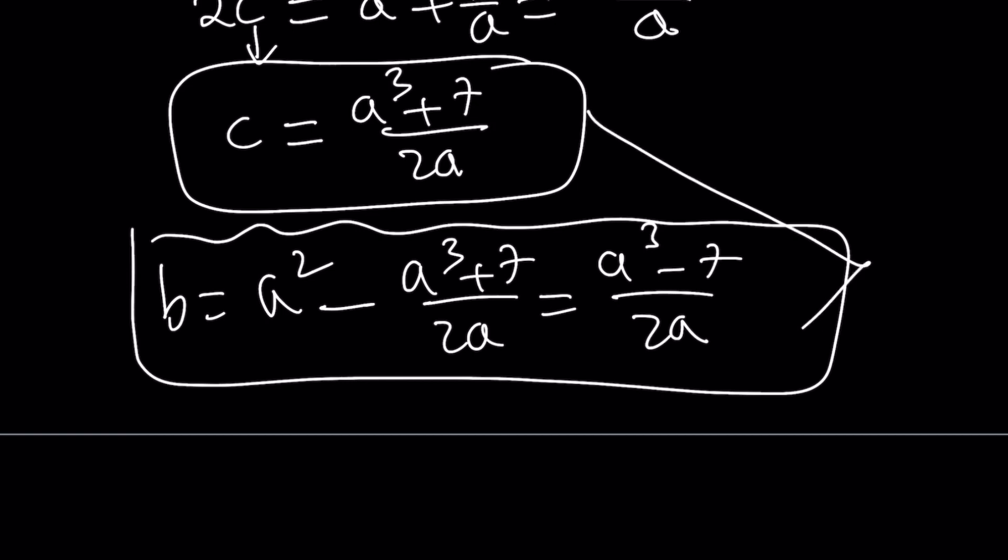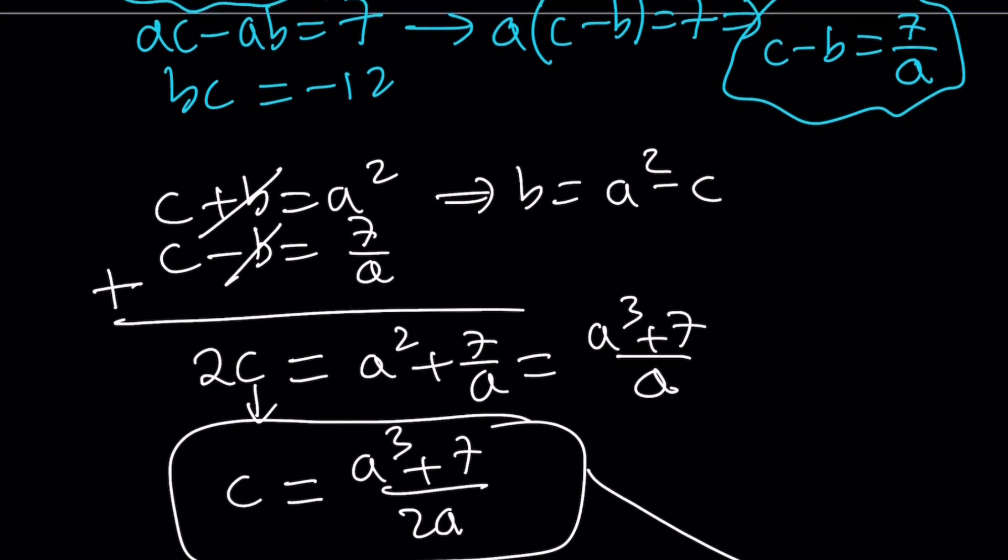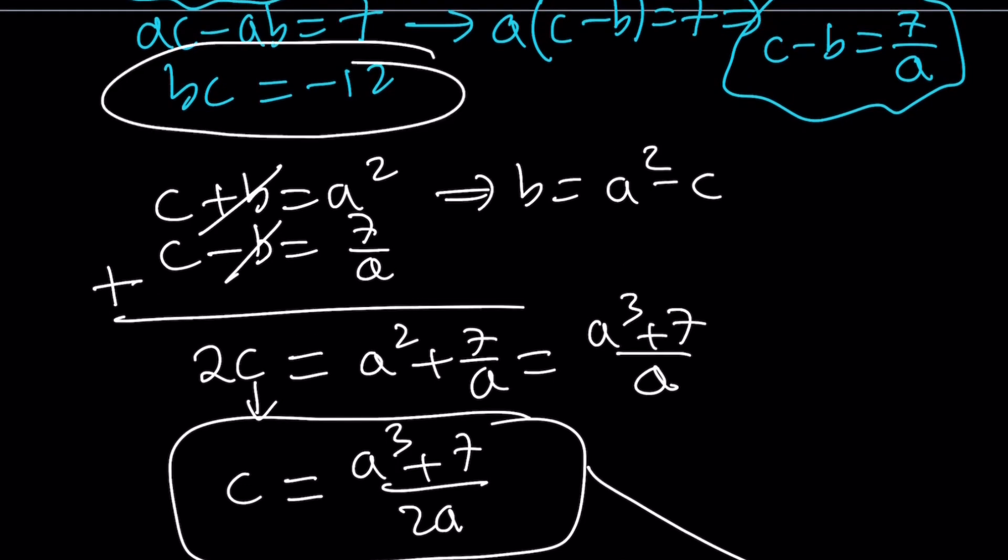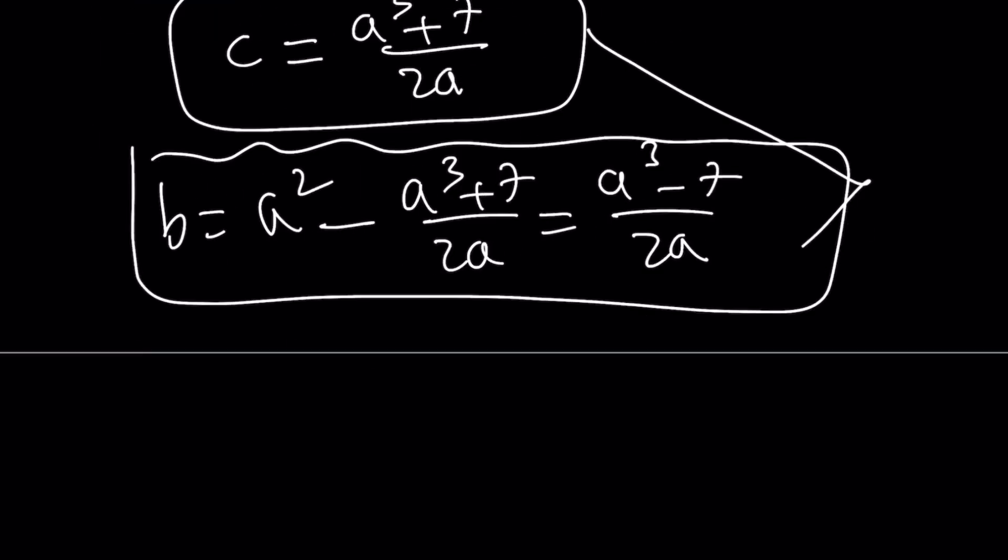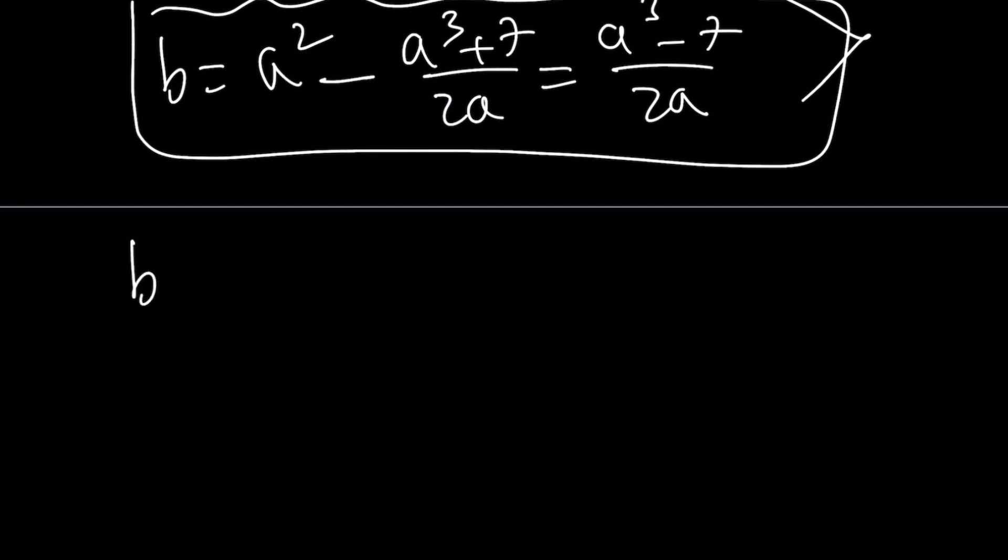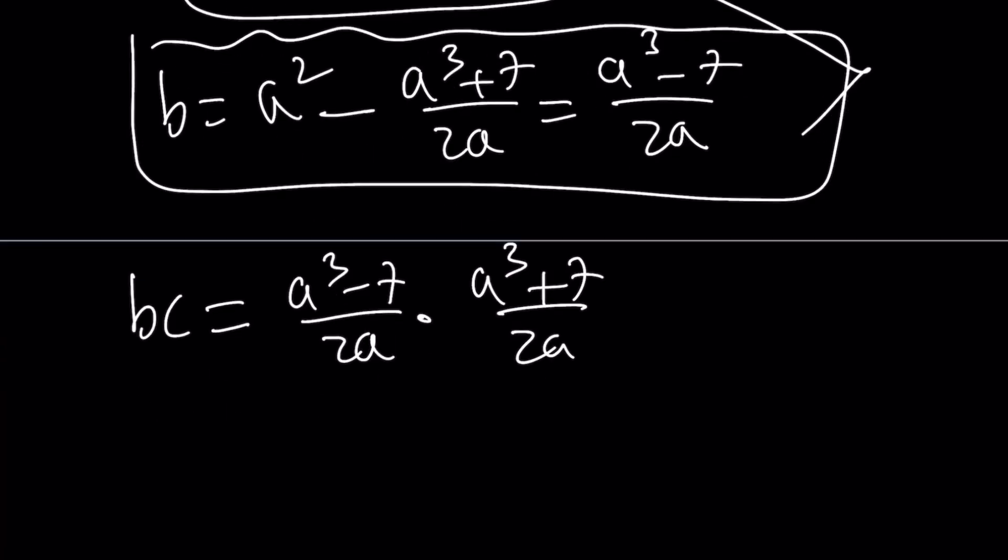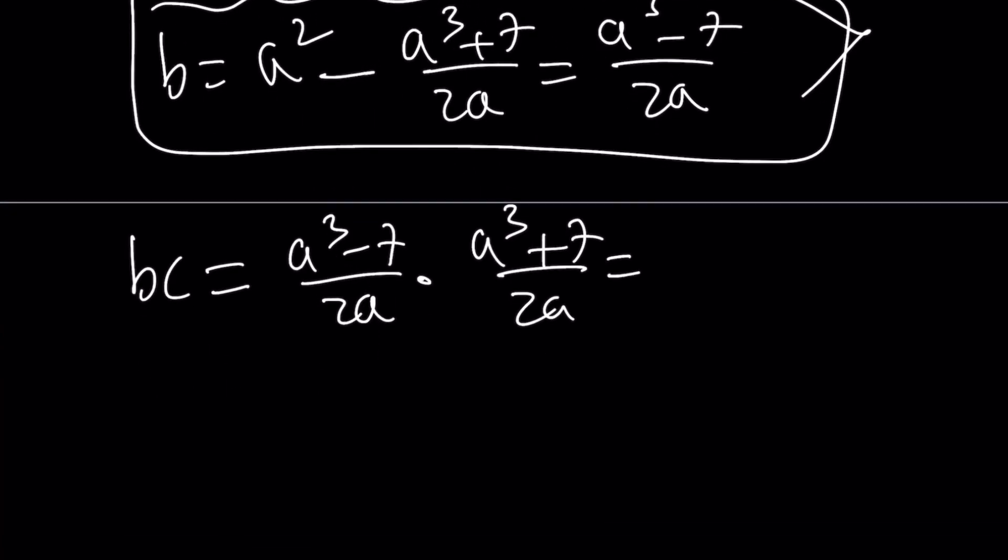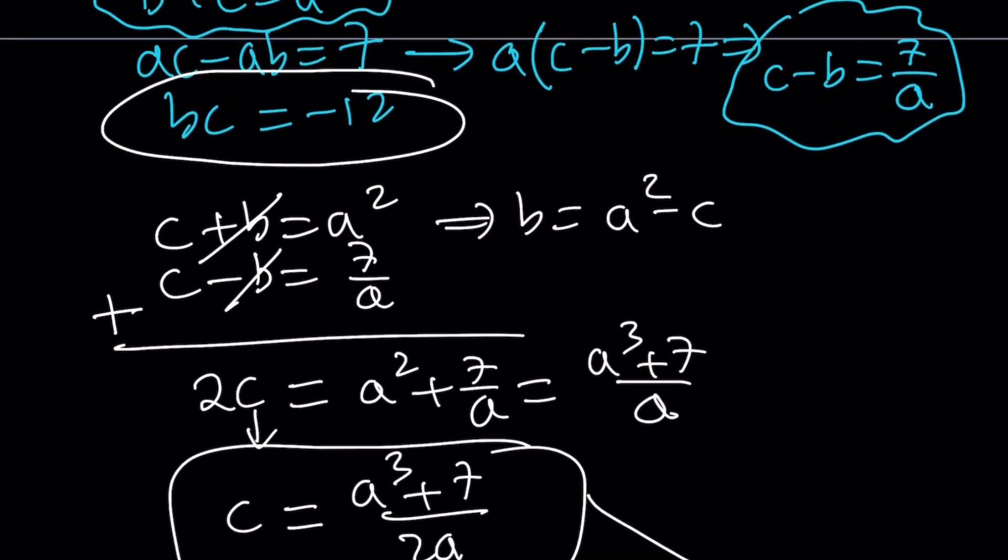Now how do we put these two together? We have a third equation. Remember, we have bc equals negative 12. So now we're going to use that here. bc is equal to a cubed minus 7 over 2a times a cubed plus 7 over 2a, because we found c first. Now their product is going to equal, from difference of two squares, a to the 6 minus 49 over 4a squared. And as you know, bc equals negative 12.